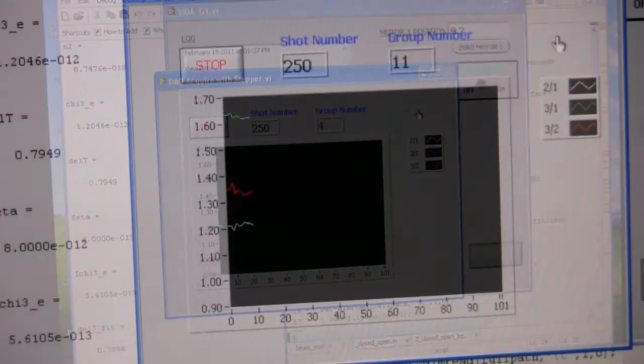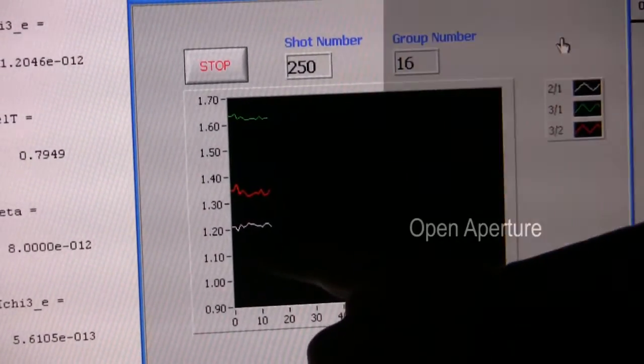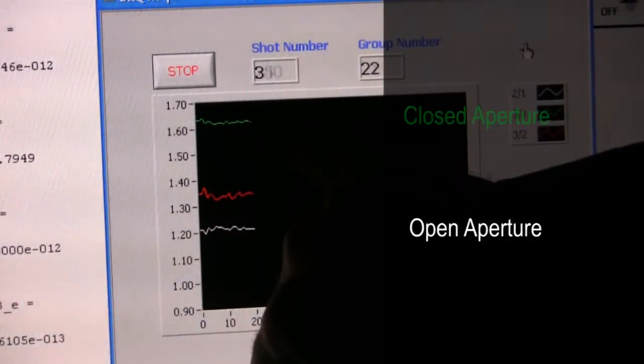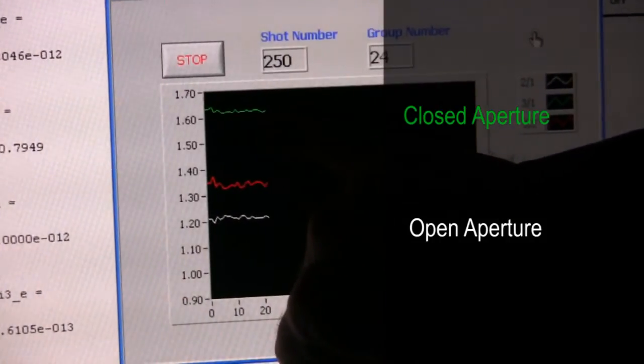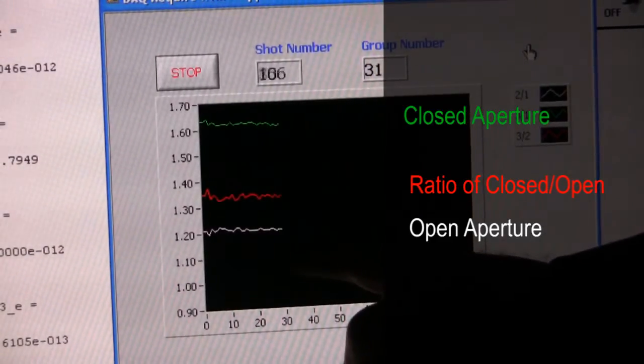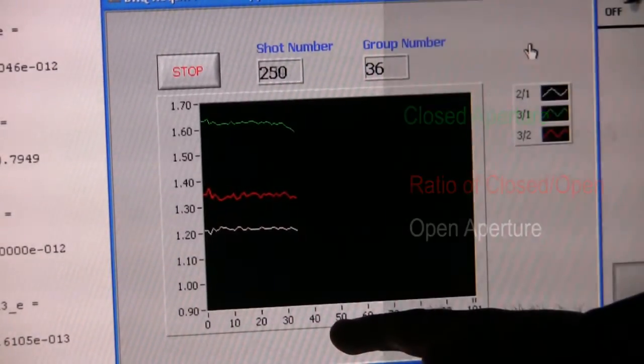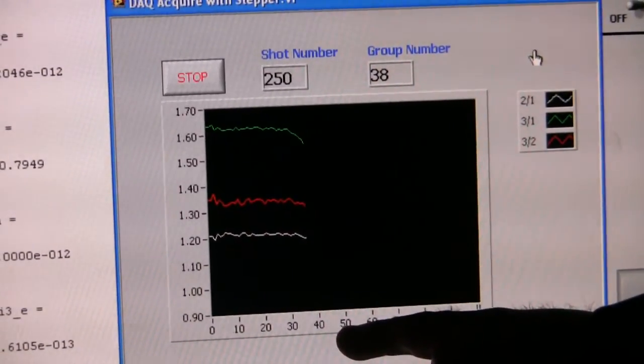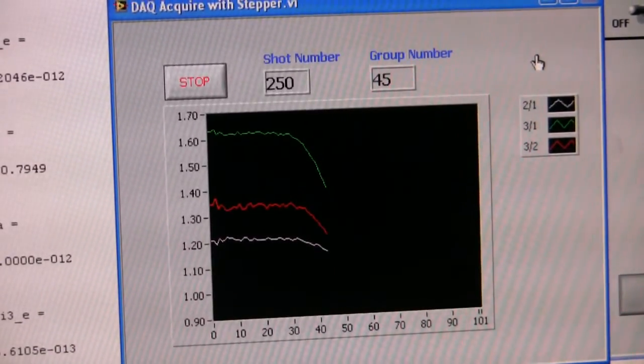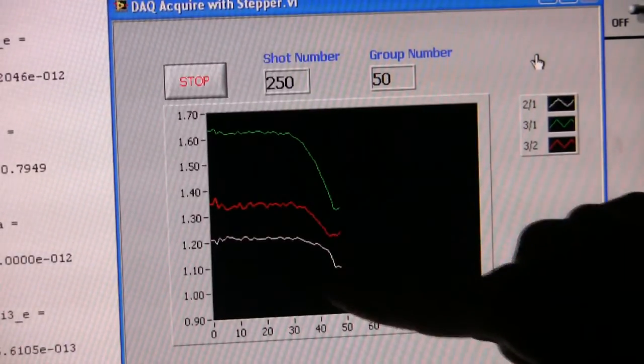Here you're going to get the open aperture signal. In the green you're going to get the closed aperture signal. And then we're going to divide the two. So again, the open aperture signal is sensitive to two-photon absorption. So as you get closer and closer to the focus, which is going to be right around 50 here, you're actually going to see the transmittance drop. Again, because there's nonlinear absorption occurring. And it will look symmetric about the axis.